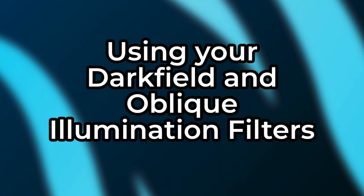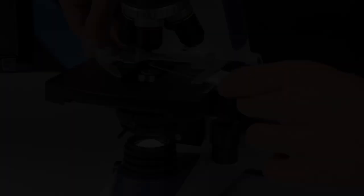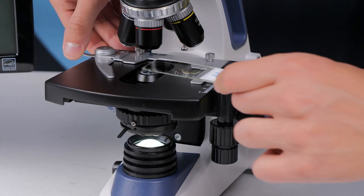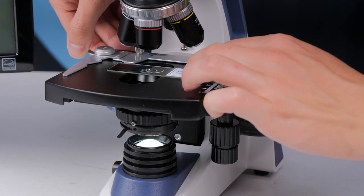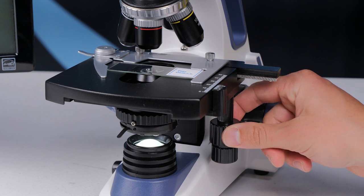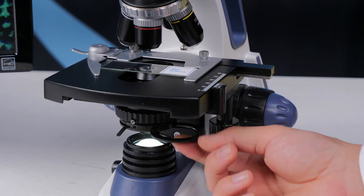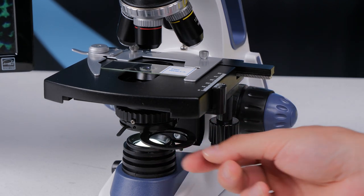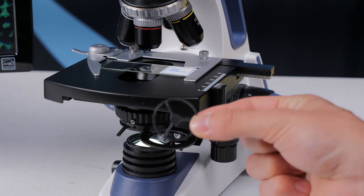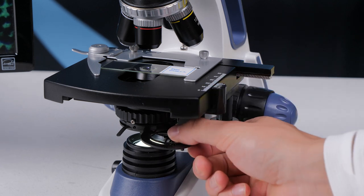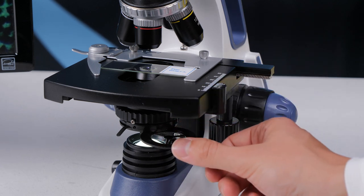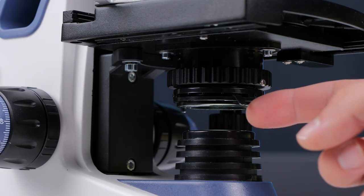Using your darkfield and oblique illumination filters. To change the microscope into darkfield mode start out with the standard transmitted light brightfield. I like to use prepared sample slides to get my darkfield setup aligned. Under the condenser is a filter holder. Place a darkfield filter in the holder and rotate it into the condenser light path. At first you won't see anything, you'll need to open up the condenser iris all the way.